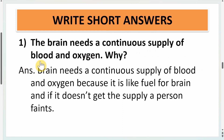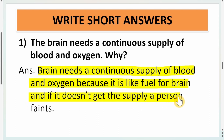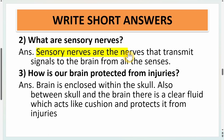Write short answers. First question: why does the brain need a continuous supply of blood and oxygen? The brain needs a continuous supply of blood and oxygen because it acts like fuel for the brain — if it doesn't get this supply, a person might faint. Our heart provides fuel to our body in the form of blood, which carries food required by every organ, including the brain. Second question: what are sensory nerves? Sensory nerves are the nerves that transmit signals to the brain from all the senses.